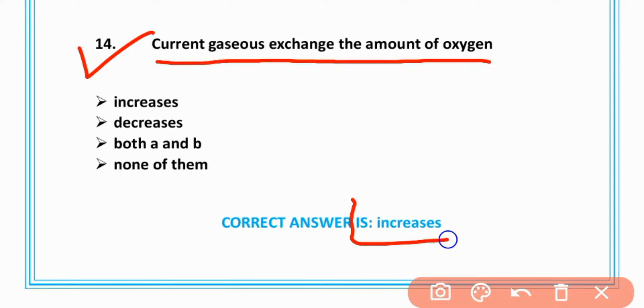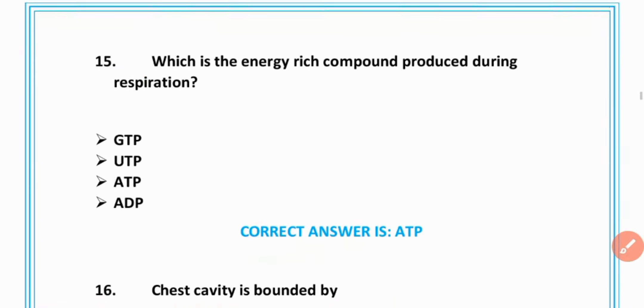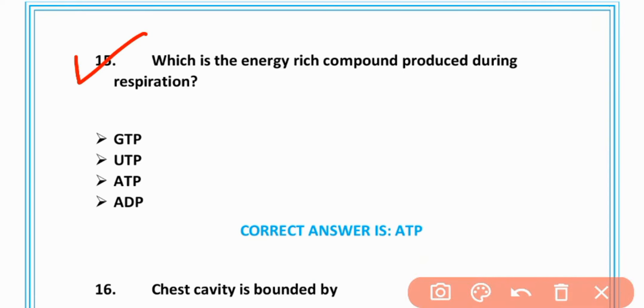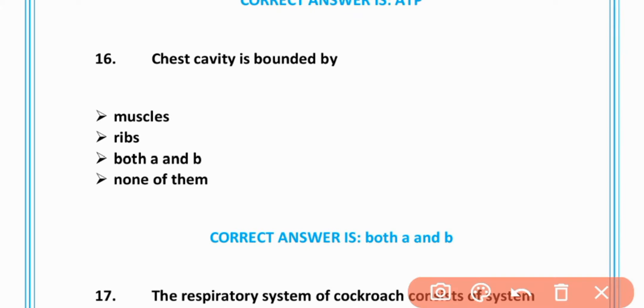MCQ number 14: During gas exchange the amount of oxygen increases, option A is correct. MCQ number 15: Which is energy-rich compound produced during respiration? ATP is produced during respiration, option C is correct.